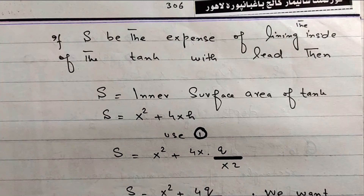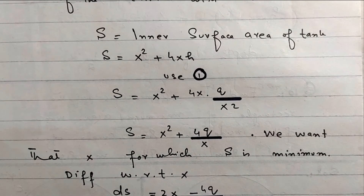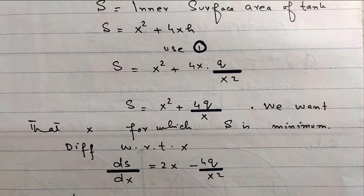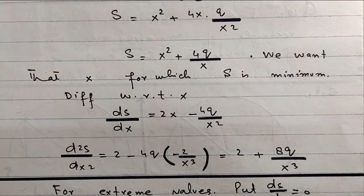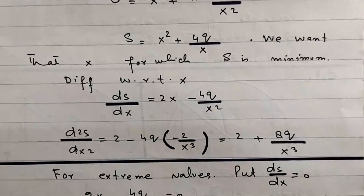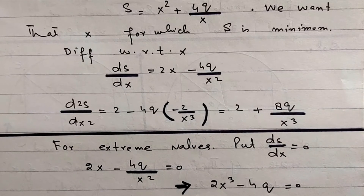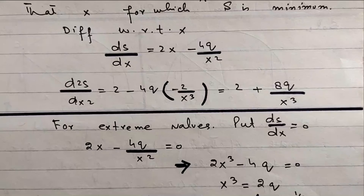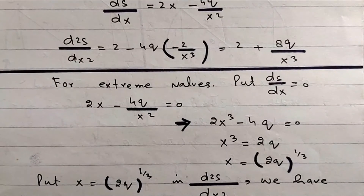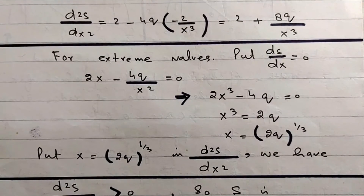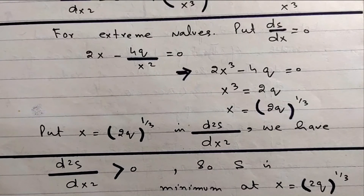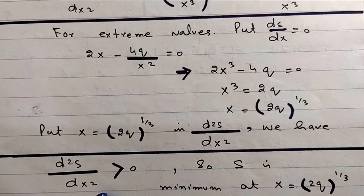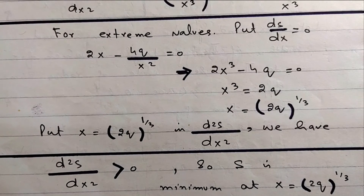We want to find the value of x for which S is minimum. Differentiating with respect to x: dS/dx equals 2x minus 4q over x squared, and d²S/dx² equals 2 plus 8q over x cubed. For extreme values, set the single derivative equal to zero, which gives x equals (2q) to the power of 1/3. Substituting into the second derivative gives a positive value, so S is minimum at x equals (2q)^(1/3).